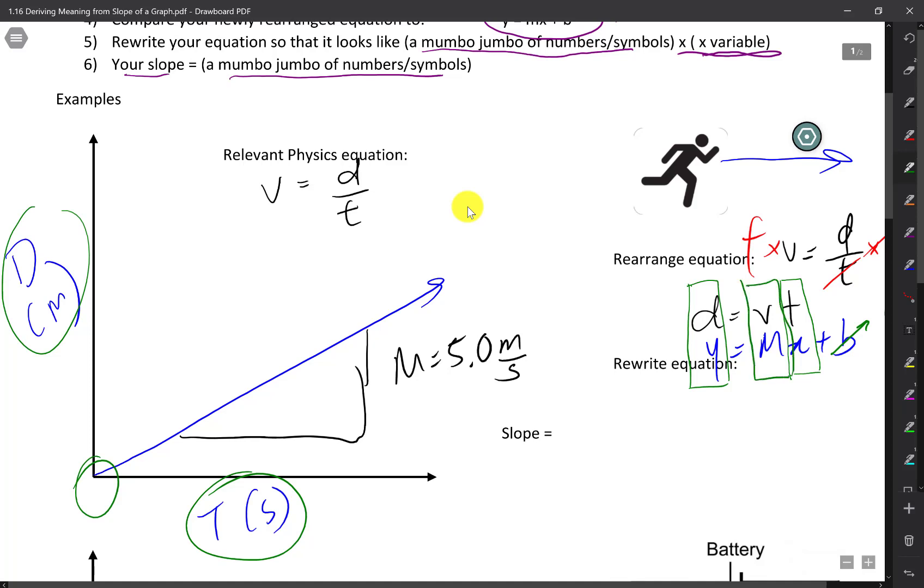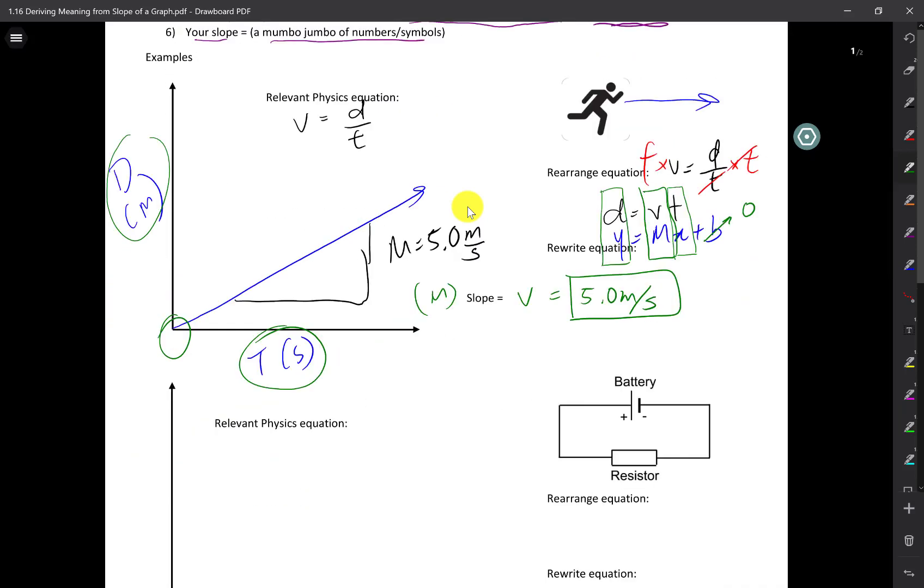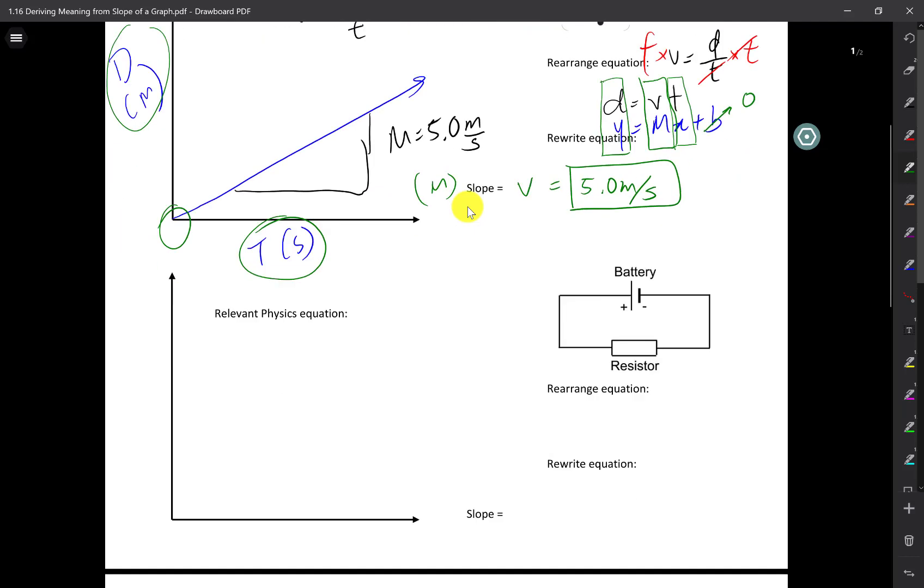So interestingly, your slope in this case is the velocity or the speed in this case. This is equal to v and v is equal to your slope, big M, from your graph is 5 meters per second. Which means the slope of this graph tells you that the runner is running at 5 meters per second at constant speed. That is the meaning of this slope of this graph. If you actually know this actual speed of this runner, you may be able to compare that one to the one that you find and see if there's a discrepancy, which I will talk about later.